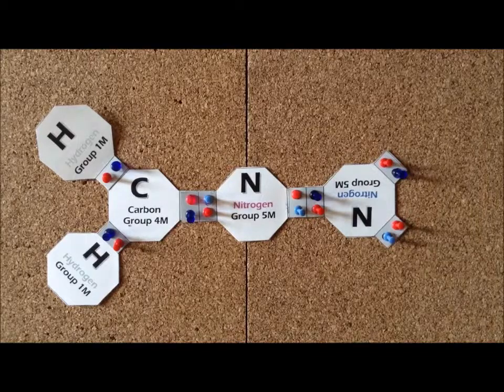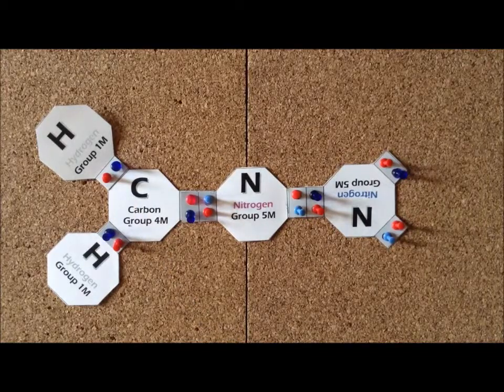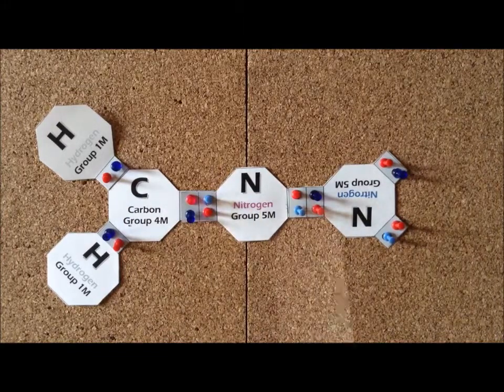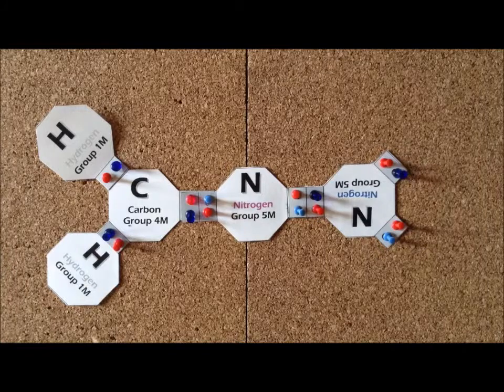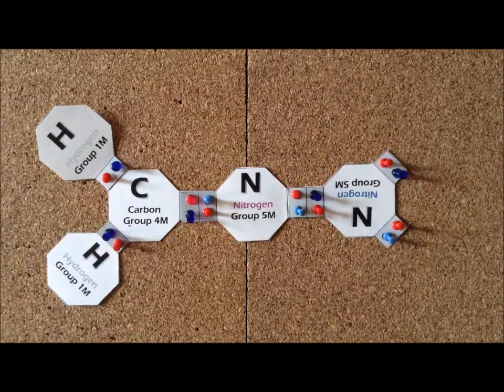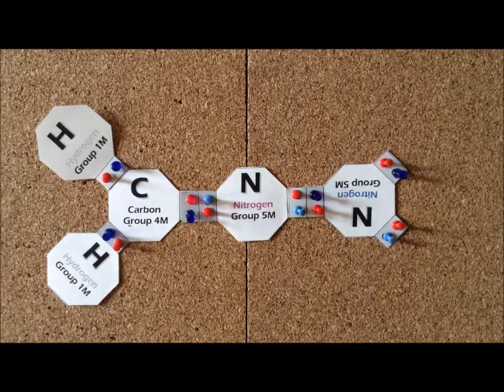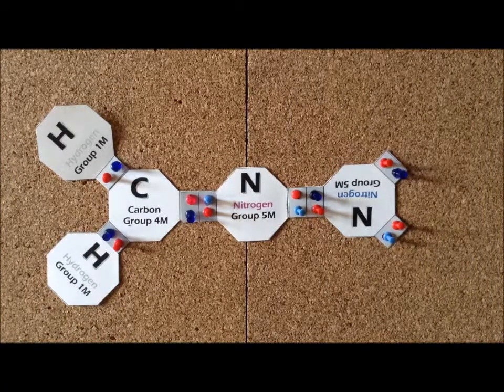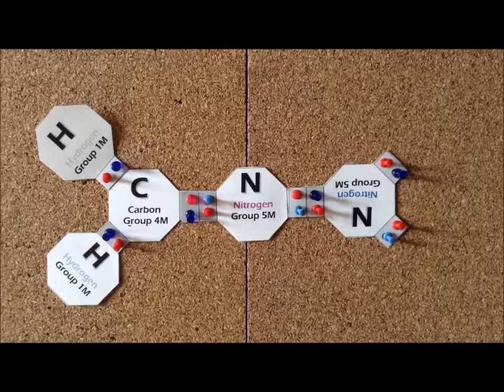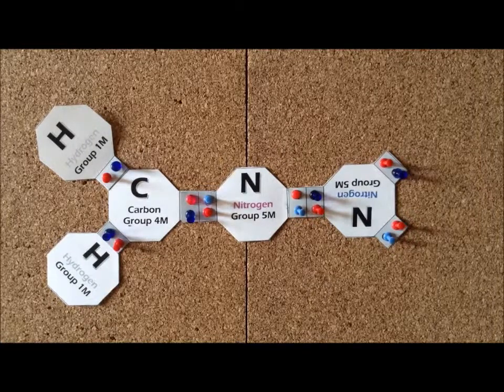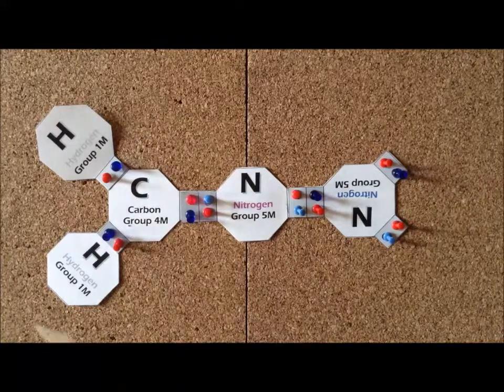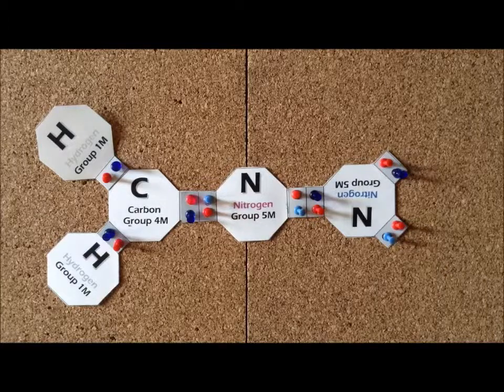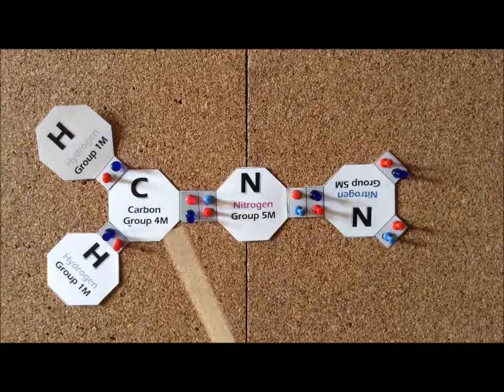We can satisfy the octet rule for carbon and nitrogen by linking them together in a linear fashion with double bonds, and the two hydrogens are attached as usual by single bonds, thereby satisfying the duet rule for hydrogen. Diazomethane is an incredibly reactive compound, but it does enjoy at least enough stability that we can isolate it and purify it, and this is the Lewis structure.